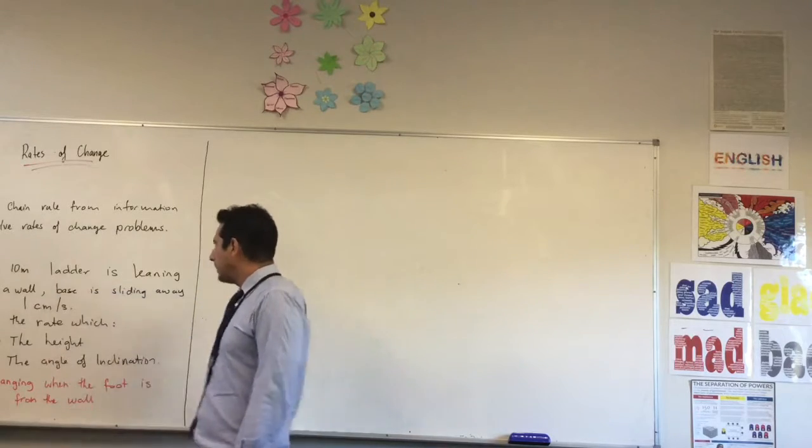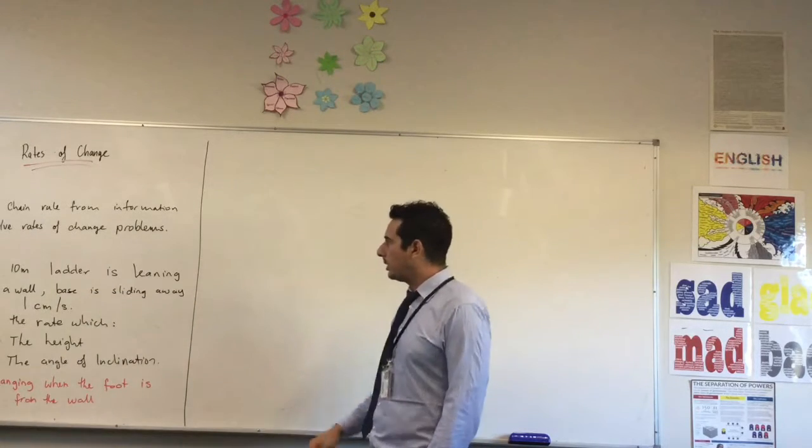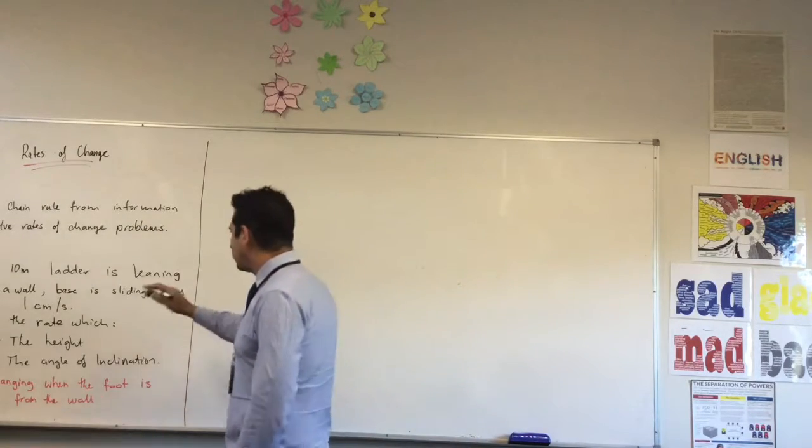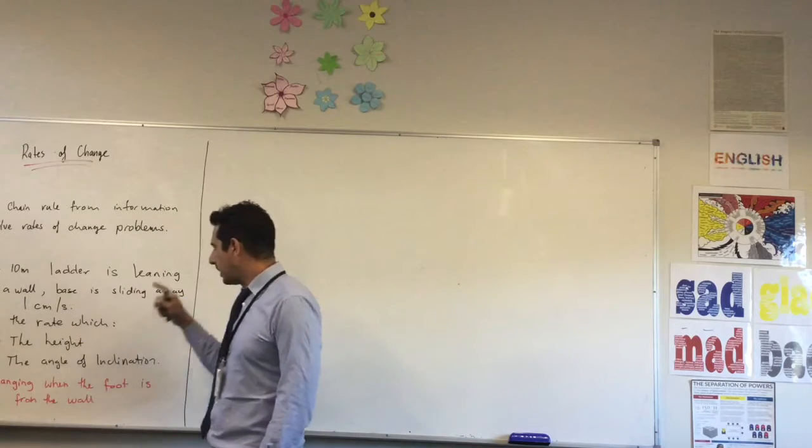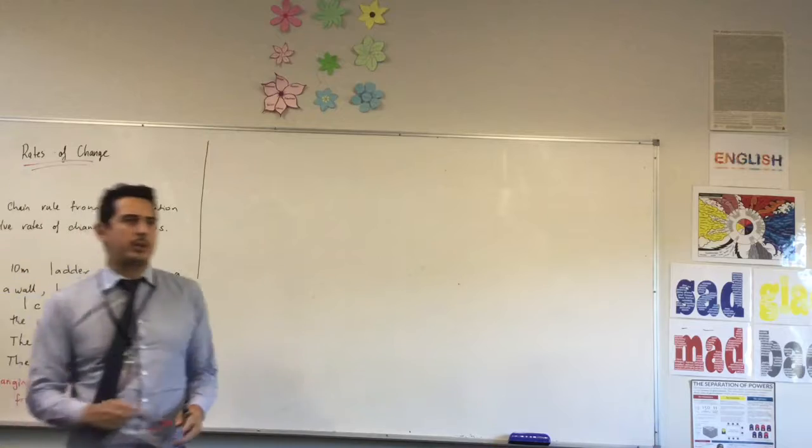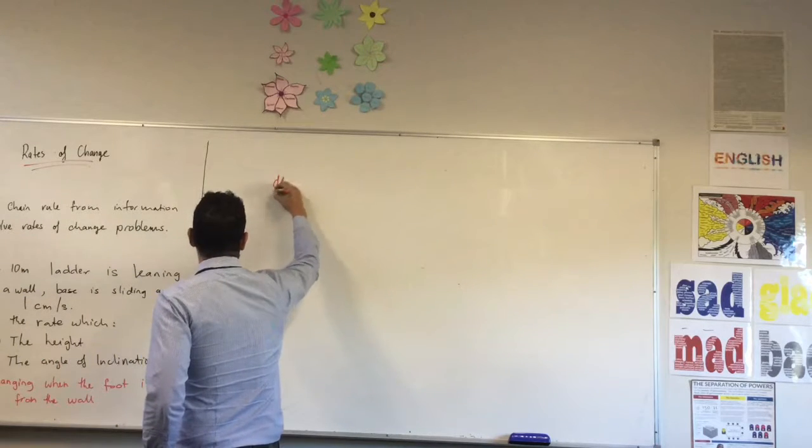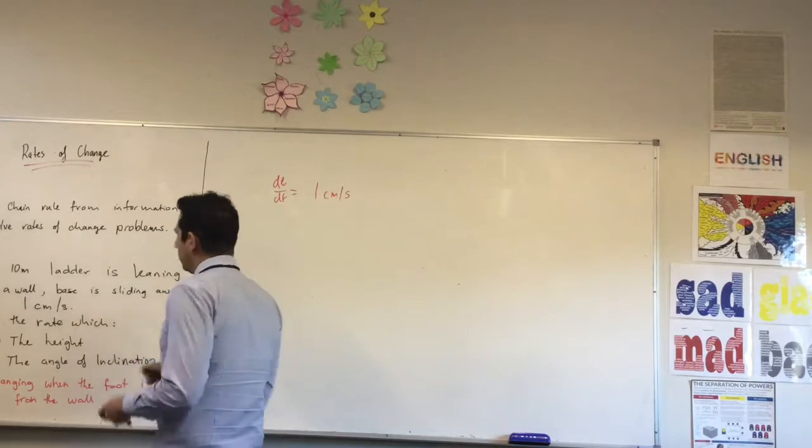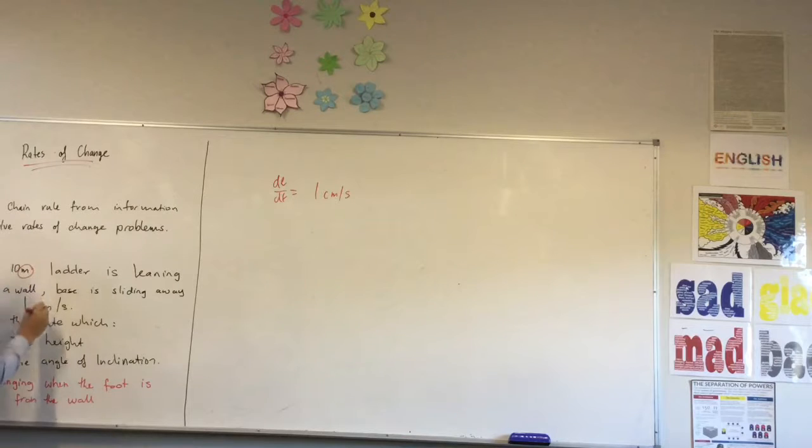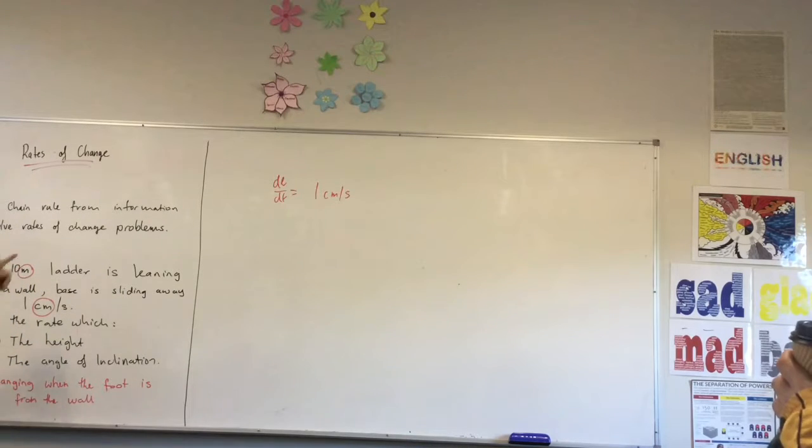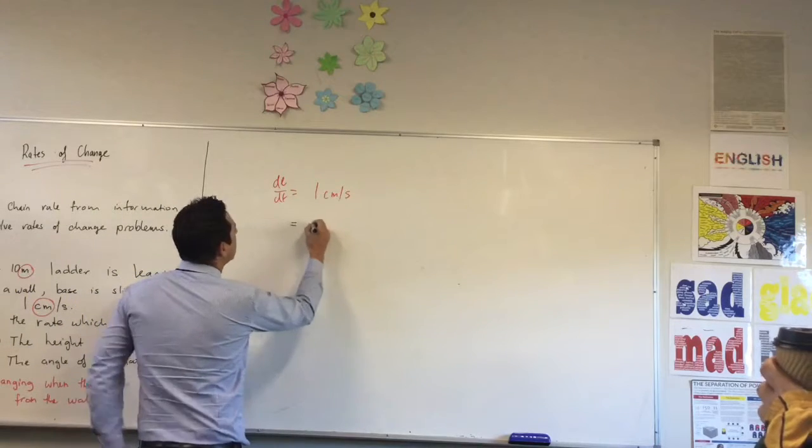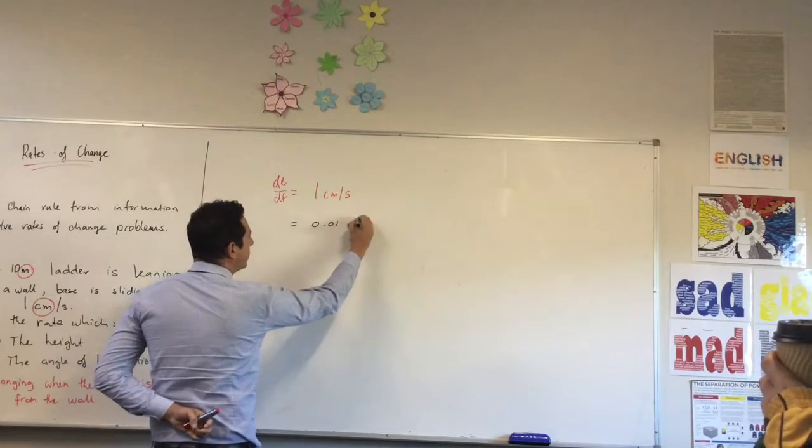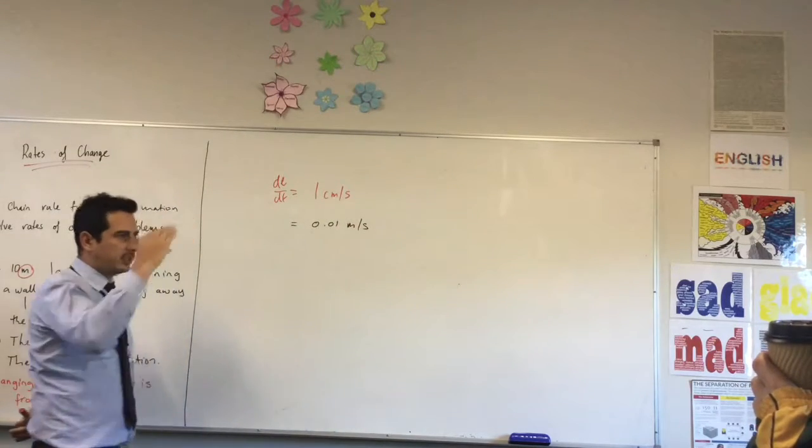So we've got a 10 meter ladder leaning against the wall and its base is sliding. We're assuming the wall's straight up. The base is sliding away at one centimeter per second. What do you notice straight away from the question? That's meters and that's centimeters. I'm going to change this rate to 0.01 meters per second, so we're consistent with the units.